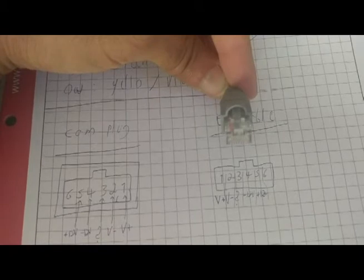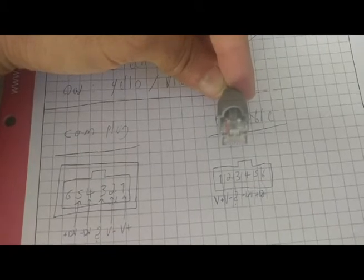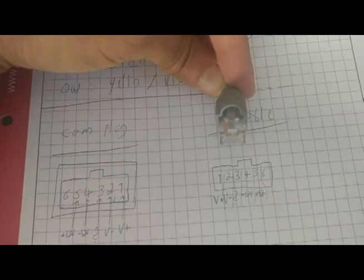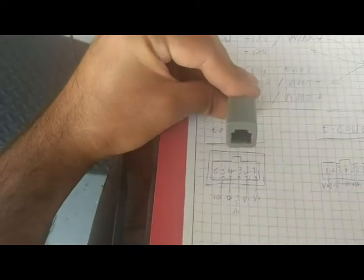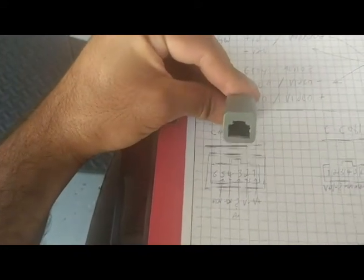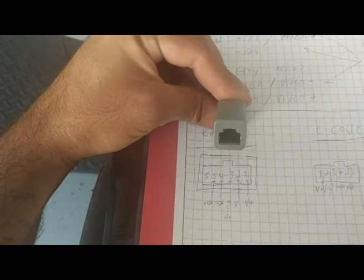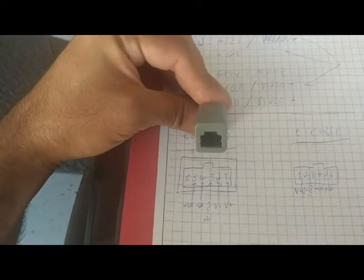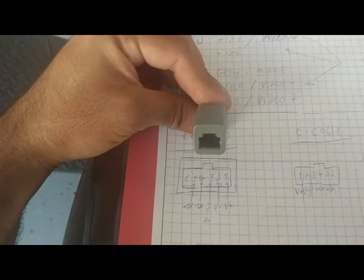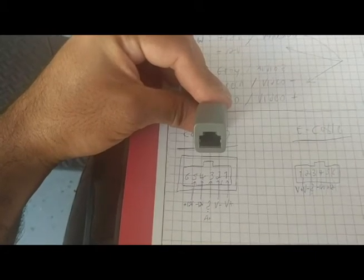Now if you look at the camera plug, this is how it looks. So I numbered from the right this time so it's going to match. And the first plug on the right is positive video, then negative video.